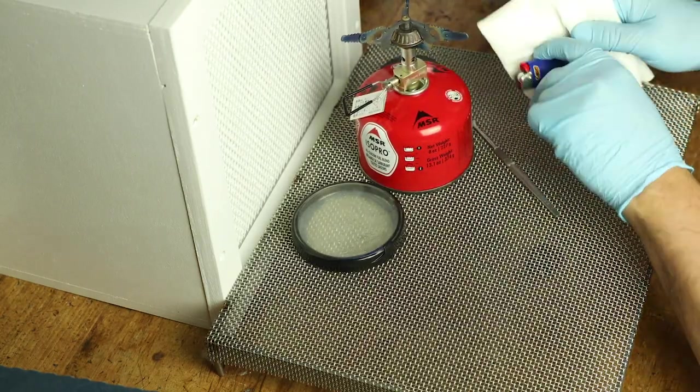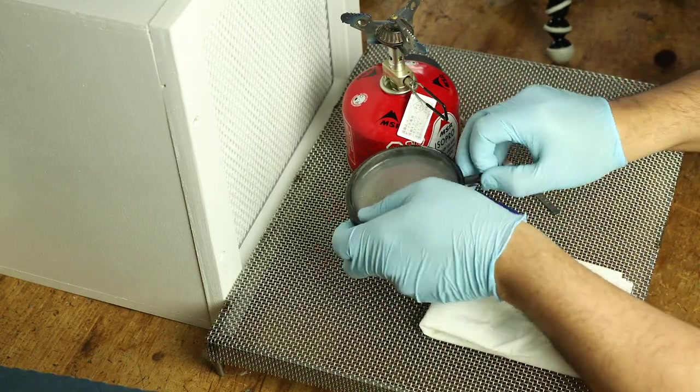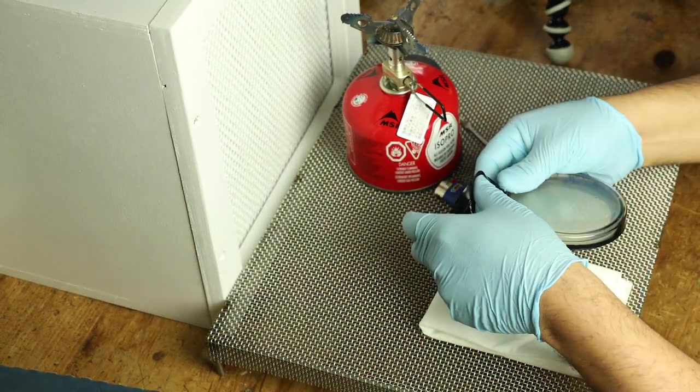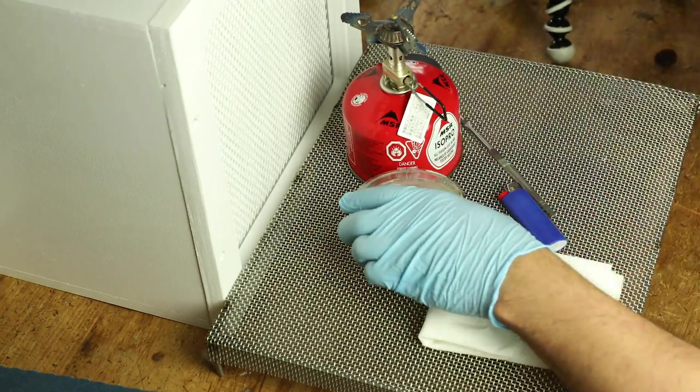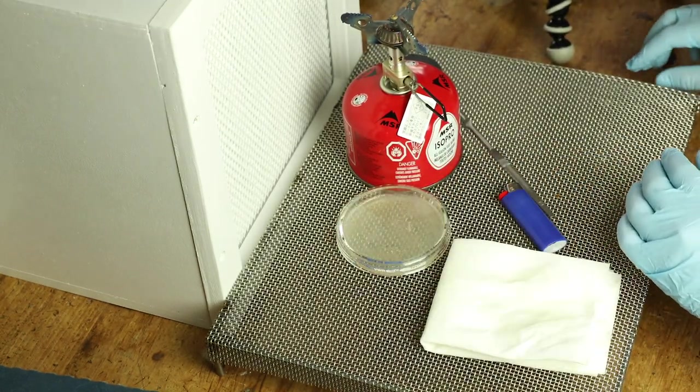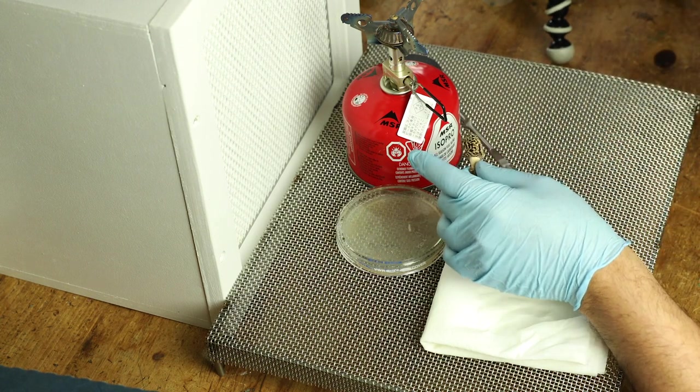With your flow hood on, you're going to clean everything you plan on using with 70% alcohol. You're going to use 70% alcohol specifically because the 90% doesn't have as high water content and is not as good at lysing bacteria and killing bacteria as effectively as a 70% solution.